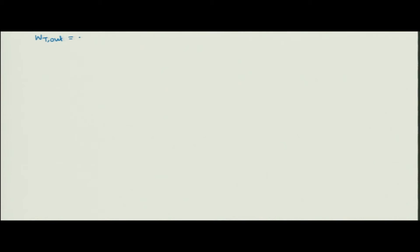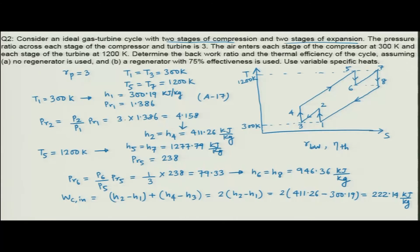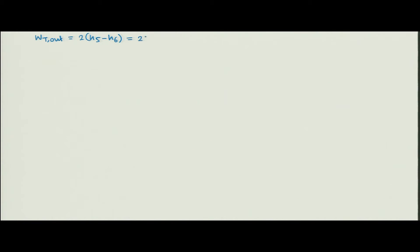The turbine work is 2 × (H_5 - H_6), since H_7 = H_5 and H_8 = H_6. Substituting: 2 × (1277.79 - 946.36) = 662.86 kJ/kg. The back work ratio is compressor work divided by turbine work: 222.14 / 662.86 = 33.5 percent.